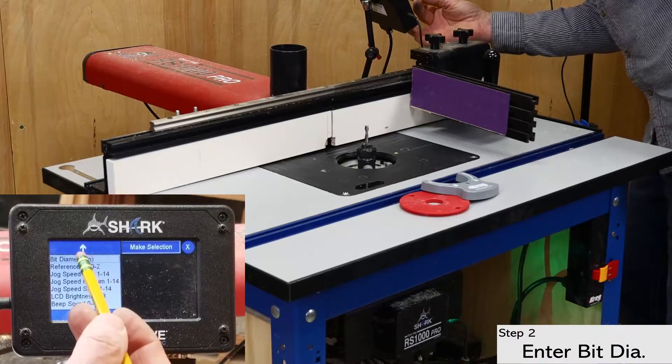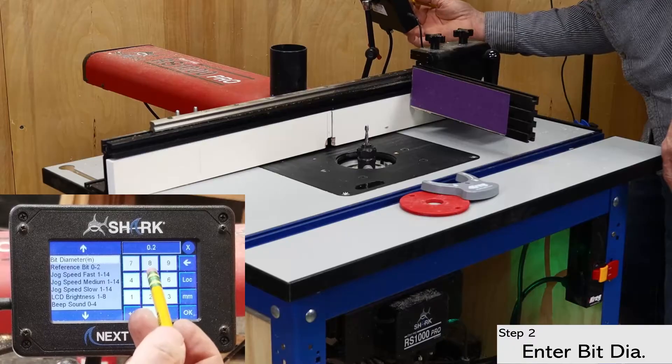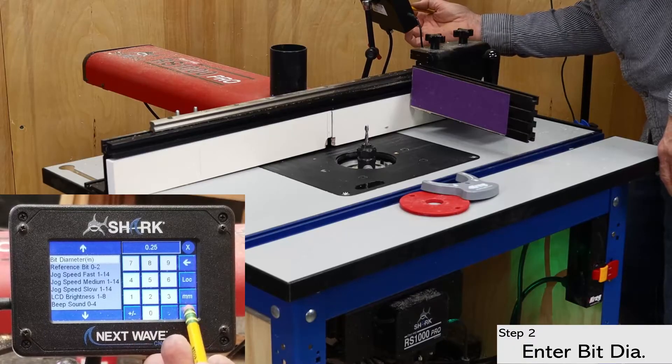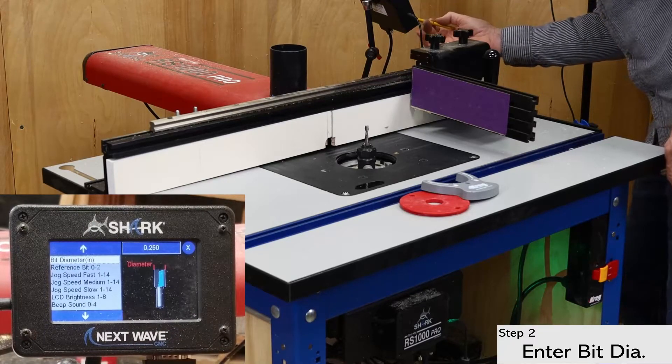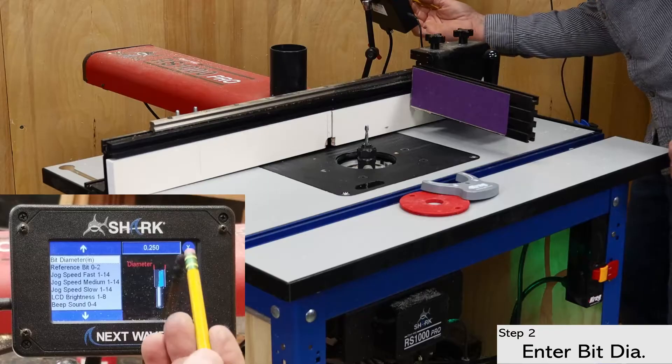With the bit installed, open the settings screen and enter the bit diameter. There are a couple of places in the pendant where you can enter the bit diameter, but I prefer to enter it right away to avoid errors later. The diameter is also needed for the fence calibration, which is coming up shortly.